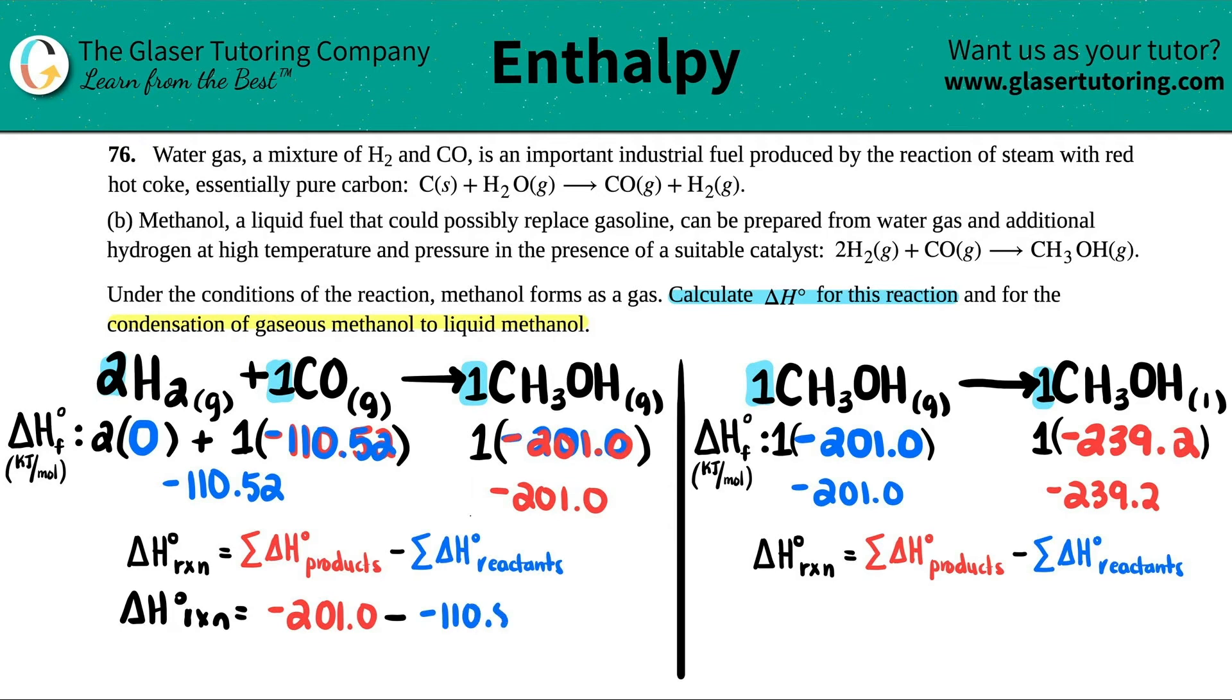If I just wrote this one out, products minus reactants: negative 239.2 minus the negative 201.0. Subtracting by a negative just means keep-change-change, so you're really adding a positive if that helps you out when you're doing the math. Either way you'll get the same answer.